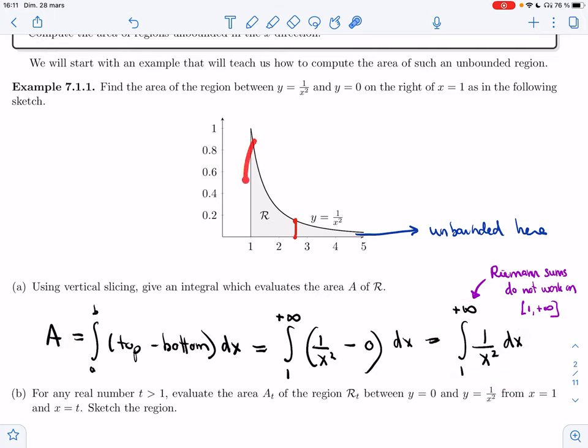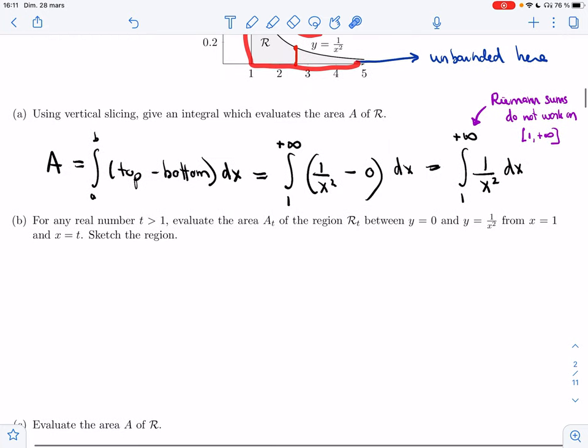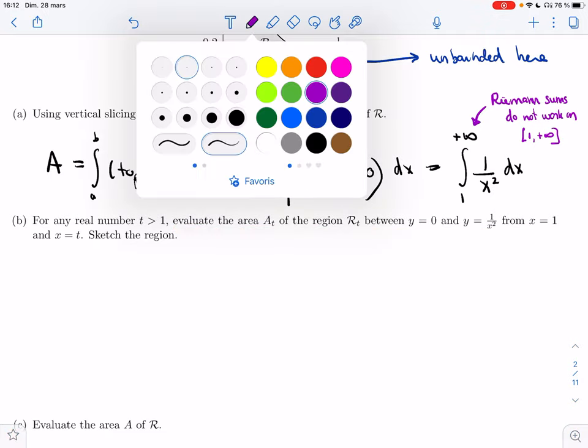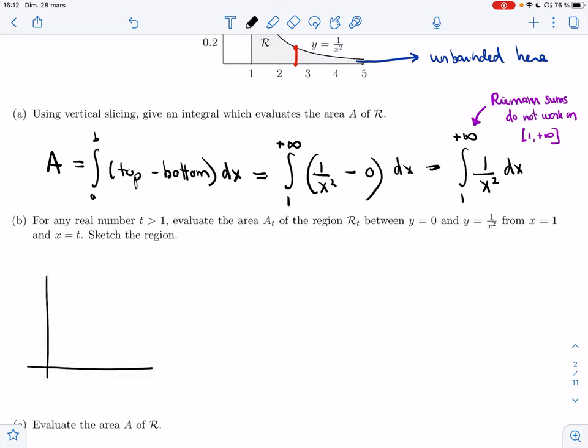Let's try to figure out what we would want this integral to be by looking at ways of getting to this area here, the area of that region. So what I'll do—my issue is with the fact that it goes on forever in the x direction, so I'll chop it. For any real number t bigger than 1, I'm going to evaluate the area of the region R_t.